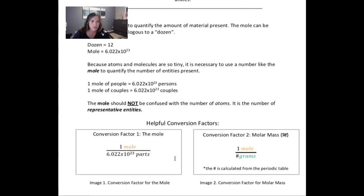Okay, and then I give some conversion factors. So one mole for every, you know, this huge number, Avogadro's number, parts or representative entities. You can call it whatever you want, parts or representative entities.